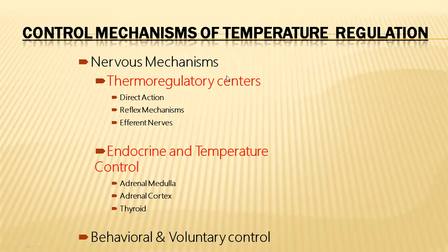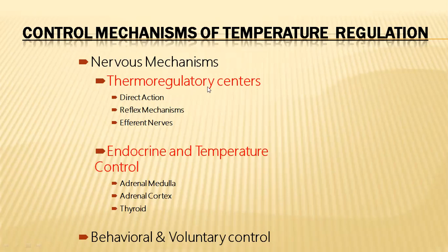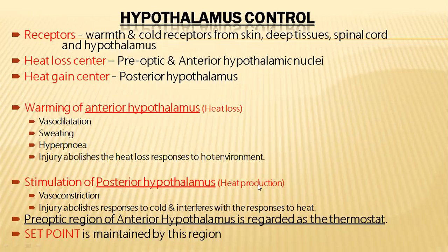Control mechanisms of temperature regulation include nervous mechanisms, endocrine mechanisms, and behavioral or voluntary control mechanisms — three types in total. In nervous mechanisms, a thermoregulatory center in the brain performs direct action, triggers reflex mechanisms, and sends signals through efferent nerves to effector organs. The endocrine system regulates body temperature through secretions of adrenal medulla, adrenal cortex, and thyroid hormones. Behavioral and voluntary mechanisms also contribute to regulating body temperature.